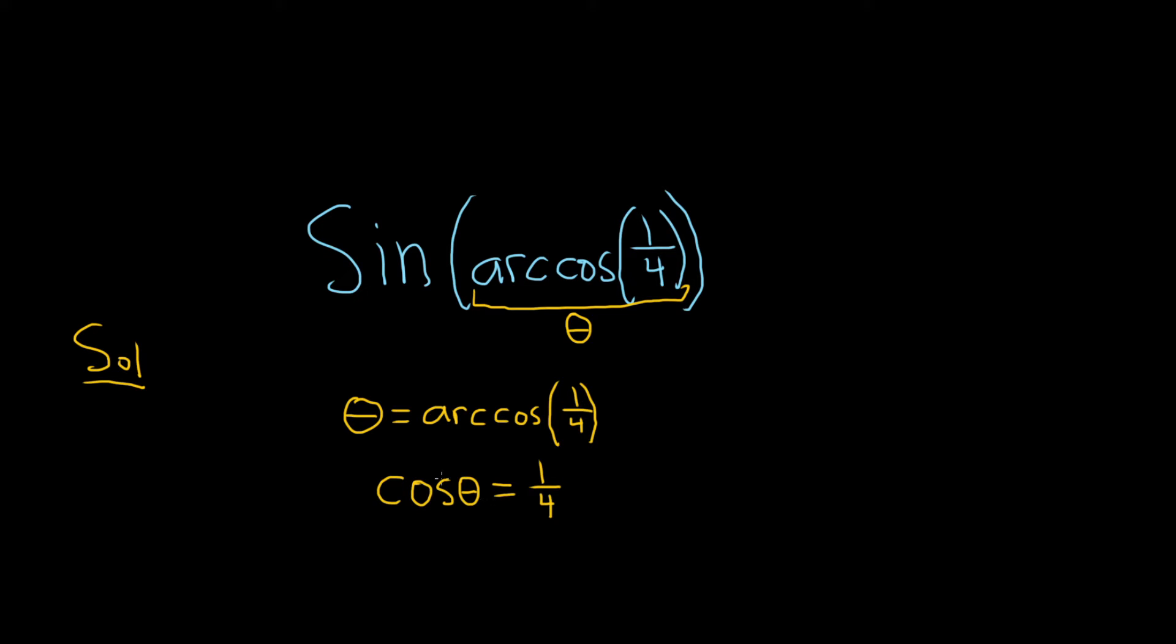And so now what we'll do is we'll draw a triangle for theta using an ancient proverb: SOH CAH TOA. Really powerful stuff. So here cosine is CAH. So it's adjacent over hypotenuse.